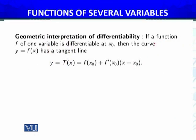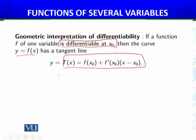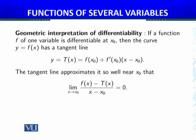Geometrical interpretation of differentiability: if a function of one variable is differentiable at x₀, then the curve y = f(x) has the tangent line t(x) defined by this equation. This tangent line approximates the function very well such that the limit of [f(x) - t(x)] as x approaches x₀ equals zero. If t(x) is the tangent line equation, then this is exactly the definition of differentiability.